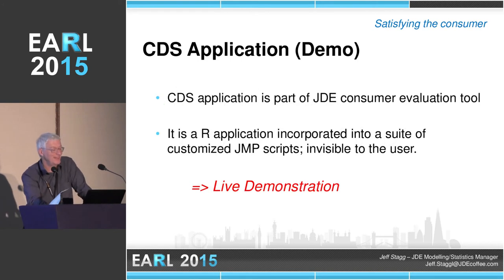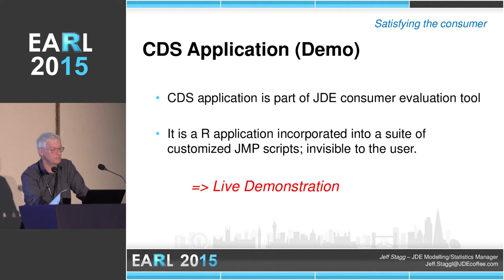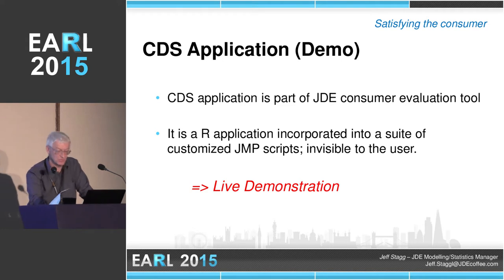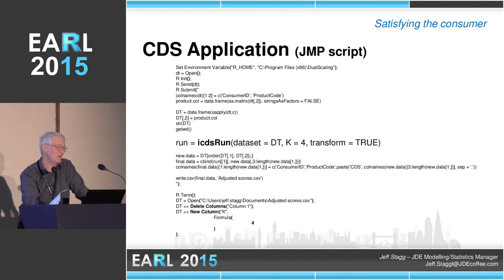The CDS application itself is an R script, developed by Mondelez at the time and Mango. It's part of what we call the JDE Consumer Test Evaluation Tool, which is a JMP software program of customized scripts. I will show how JMP is calling R and then taking the feedback from R and converting it back into JMP with this live demonstration. First of all, before I try to go live, I'll show you the outline of the script.